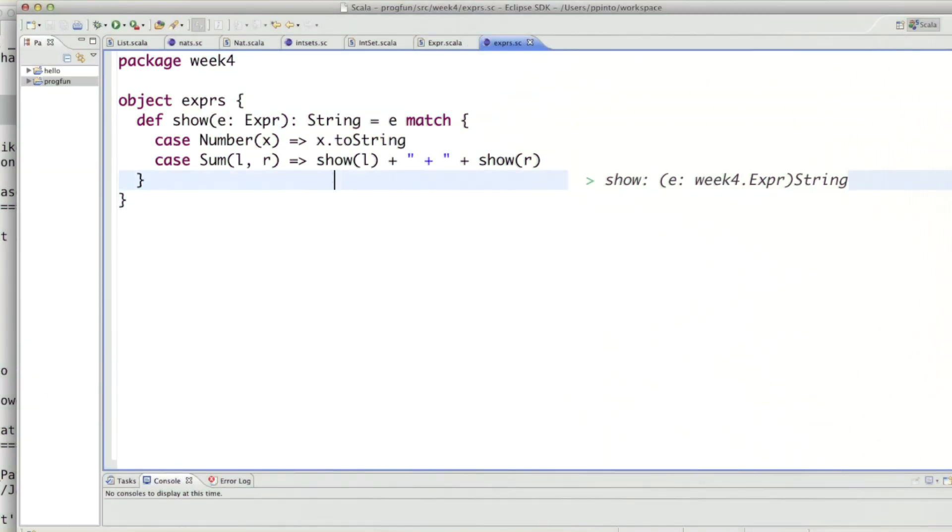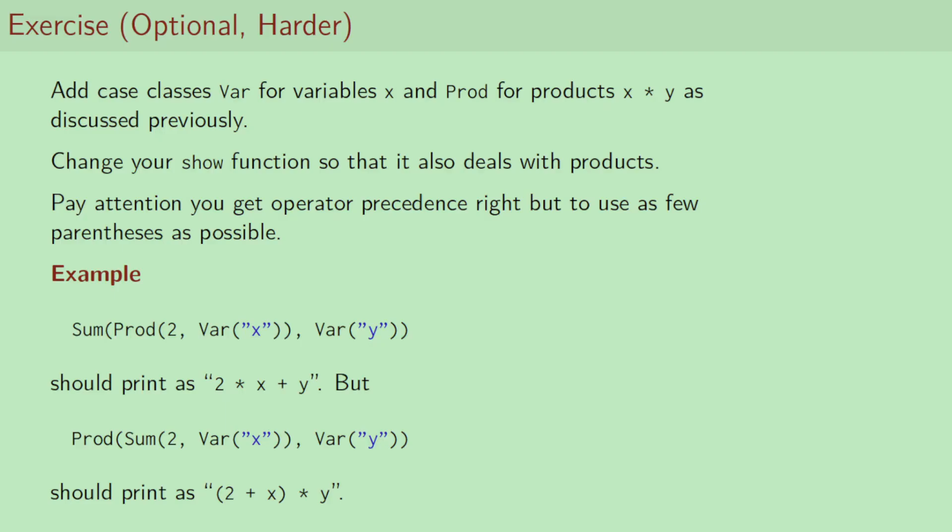So, let's test the function with some argument tree as expression. So, I would do show of, let's say, the sum of number of 1 and number of 44. What would we get? Well, we would get the string 1 plus 44 as expected. So, if you haven't had enough of it yet, here's another exercise for you, which is optional and much harder than the first one.